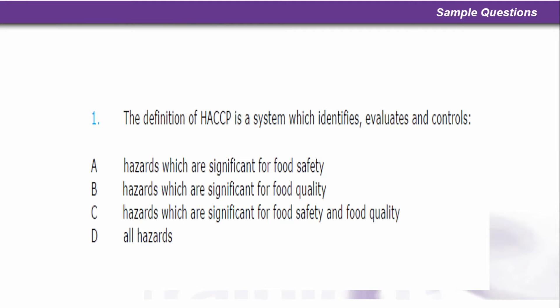Question 1. The definition of HACCP is a system which identifies, evaluates and controls what? Is it: A. Hazards which are significant for food safety? B. Hazards which are significant for food quality? C. Hazards which are significant for food safety and food quality? D. All hazards. Which one do you think? You can pause and decide.